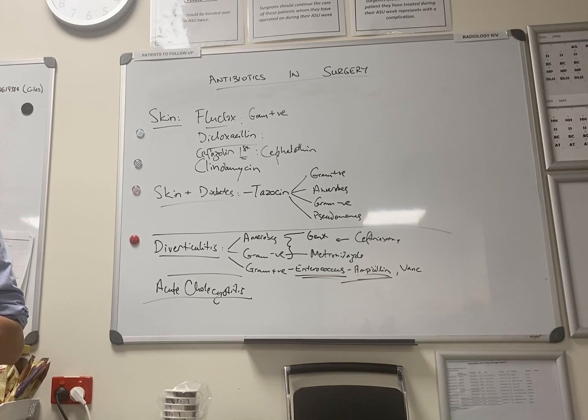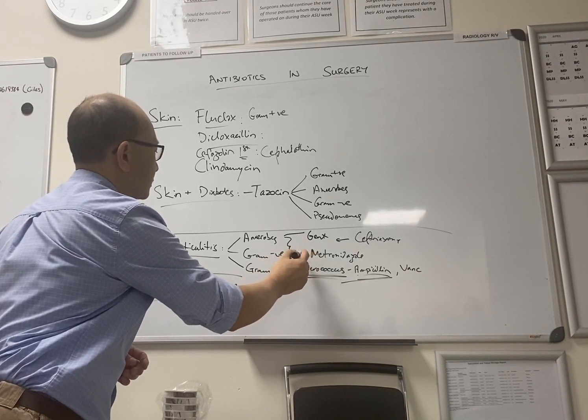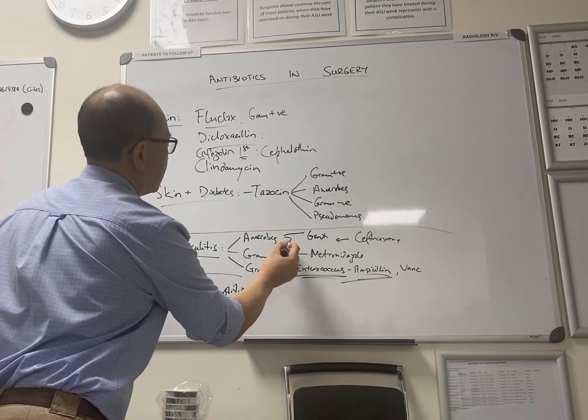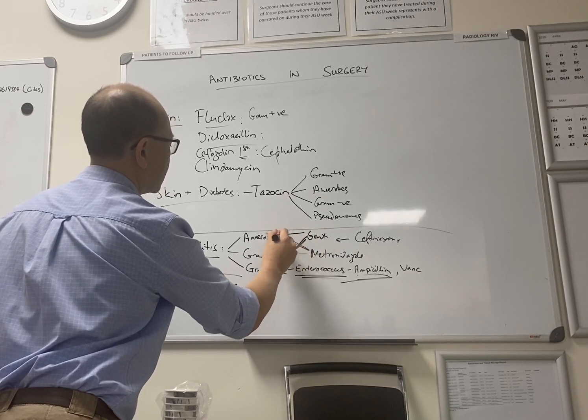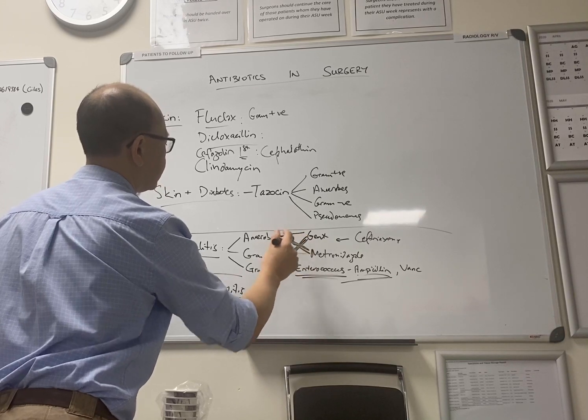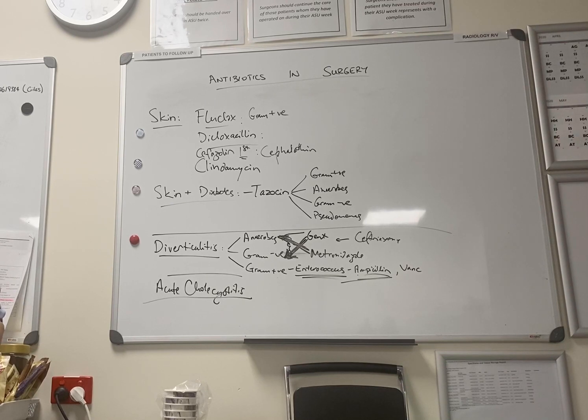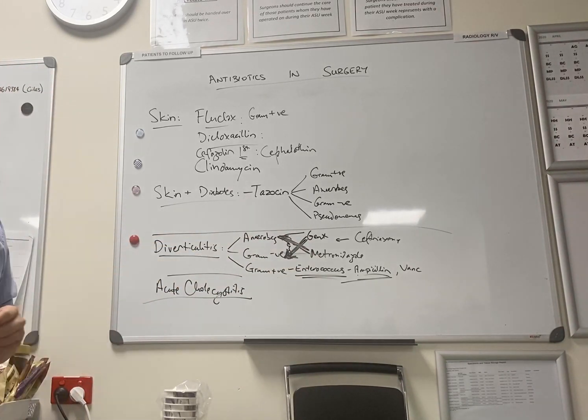Metronidazole is also for gram-negatives. So metronidazole is for... Oh, sorry. I've got these all mixed up. Yeah. Yeah. Metronidazole is for anaerobes. And the gent is for gram-negatives. Thanks for pointing that out. Other than gent and extended broad-spectrum penicillin, what else gives you gram-negative cover? And it's also good orally.